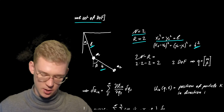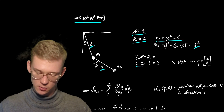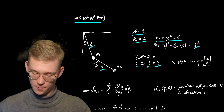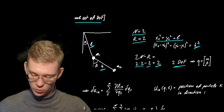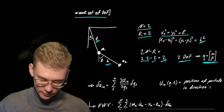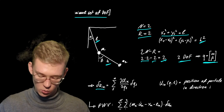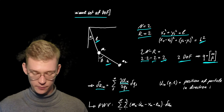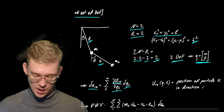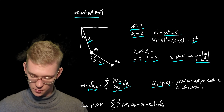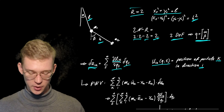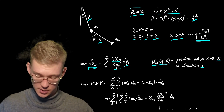With two bodies and two constraints, we have 2 times 2 minus 2, leaving us with two degrees of freedom. In our case these are alpha and beta — these are our q's. Now we have to get our virtual displacement: we get the position depending on q, derive it by the q's, and multiply by delta q's to get the displacement. This gives us the position of particle k in direction i.